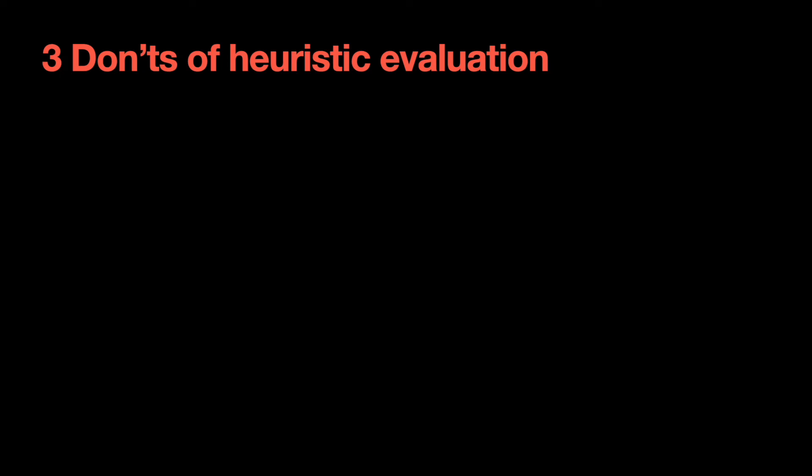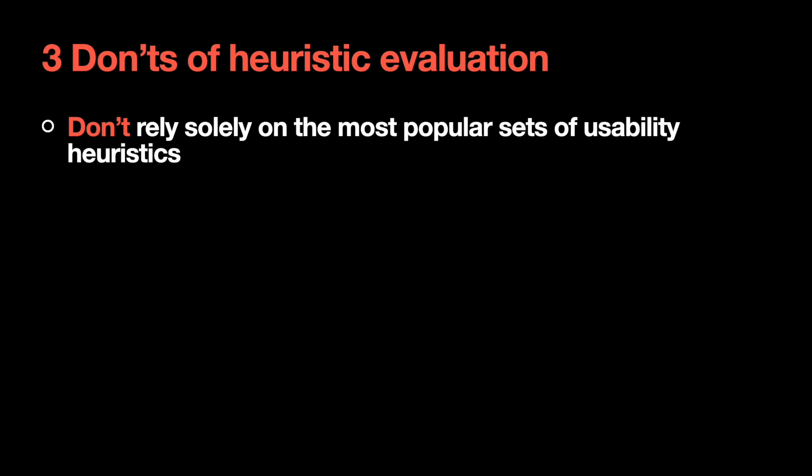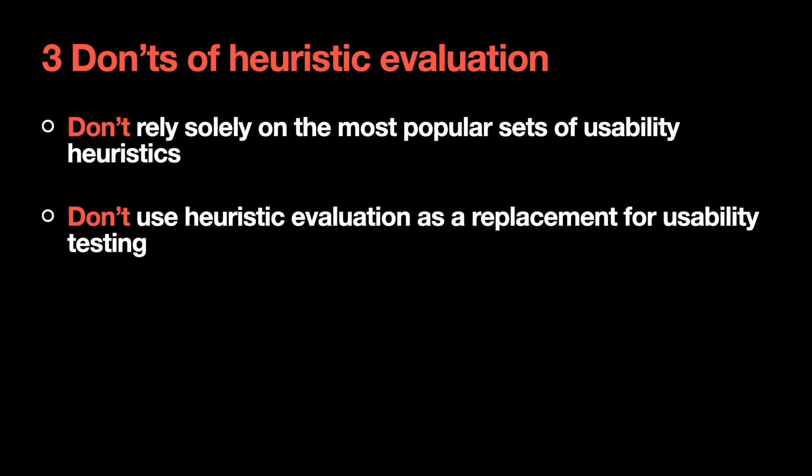Now let's talk about things you shouldn't do when conducting heuristic evaluation. First, don't rely solely on popular heuristics. There are no fixed recommendations, as each design presents its own set of different needs. The heuristics coined by Jacob Nielsen or Ben Schneiderman should be used to inform usability experts, but the exact set of heuristics should be selected according to project needs. Second, a heuristic evaluation is not a replacement for usability testing — usability experts inspect the interface instead of using it, so you cannot use heuristic evaluation as a full replacement. To maximize the effect, conduct heuristic evaluation together with usability testing.